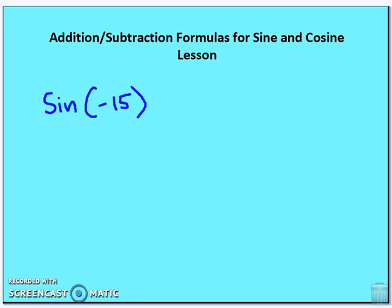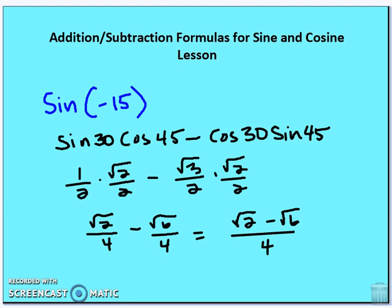Now, sine of negative 15°. You get sine(30° − 45°) = sine 30° · cosine 45° − cosine 30° · sine 45°, which evaluates to (√2 − √6)/4.